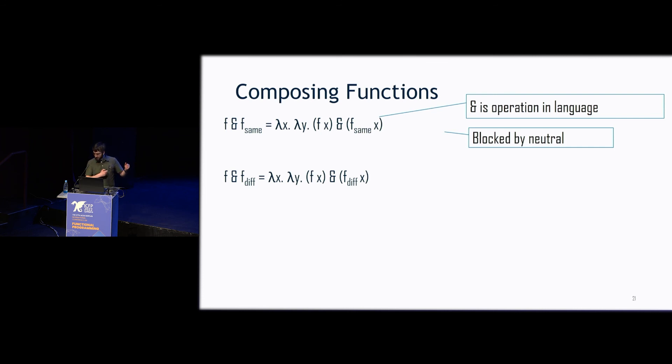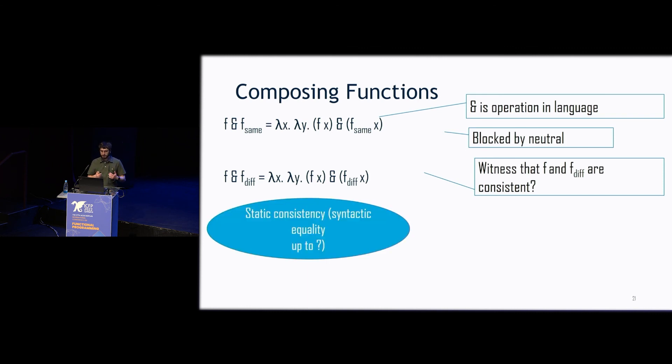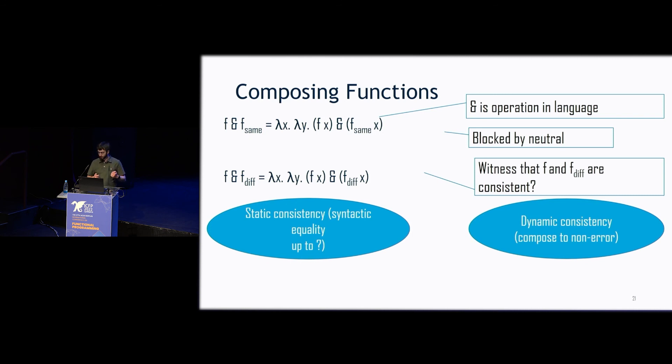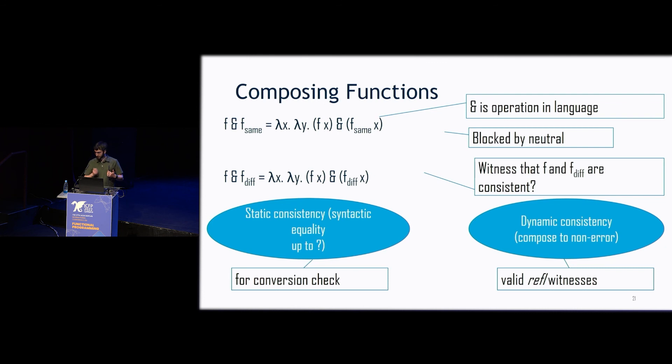But then the question is, we've got these two functions that are actually, that should be different. And by composing them, don't we have a witness of consistency that these two different functions are consistent? And so one of the key insights of our paper is that the static notion of consistency, which is syntactic equality up to question mark, is not the same as the dynamic notion of consistency, which is when two terms compose to a non-error. We want to use this one in the conversion check to preserve our static distinguishability. We want to use this one for our witnesses of equality.